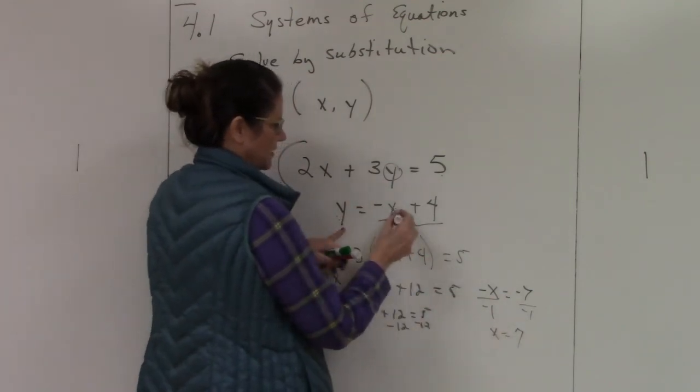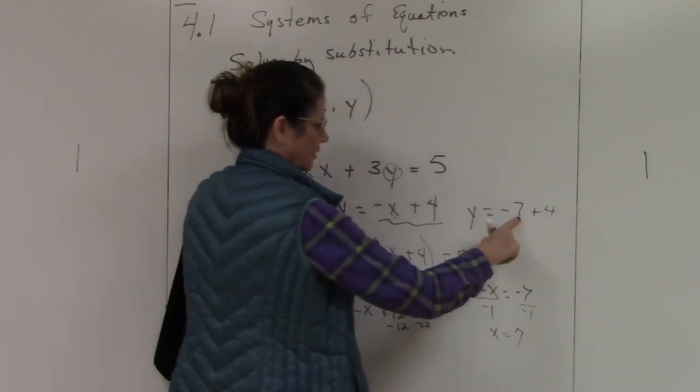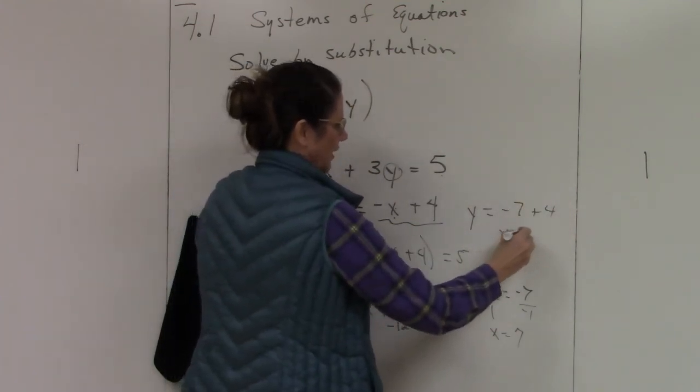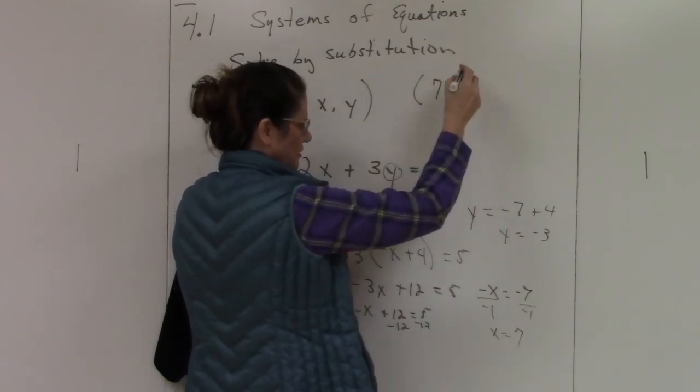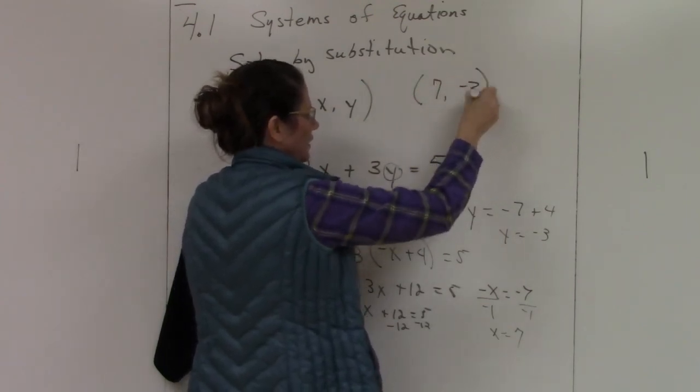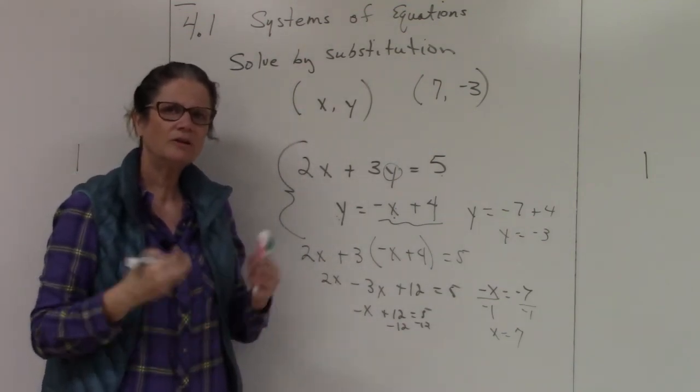So all I have to do is take my 7, plug it into where the x is, and solve. So y equals negative 3. For this one, my solution is 7 and negative 3. That's substitution—you just plug one into the other and you're good to go.